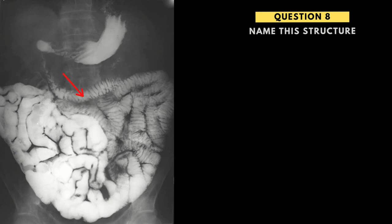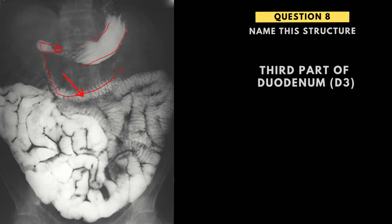Question number eight, we're asked to label this structure. We've got contrast in the small bowel and in the stomach. We can see the greater curvature of the stomach, the lesser curvature coming down into the pylorus, and then the first part of the duodenum down to the second part, wrapping around to the third part, up to the fourth part and eventually the ligament of Treitz. This structure is the third part of the duodenum. Try to label the specific part of the duodenum rather than just saying 'duodenum.' When passing a nasojejunal tube, you want to see it cross the midline, go down D2, cross the midline again in D3, and head up towards the jejunum.